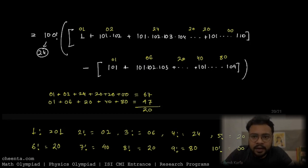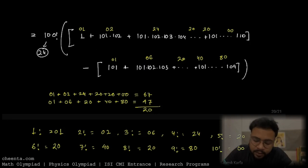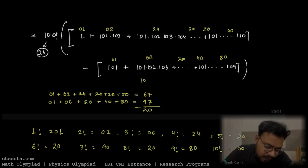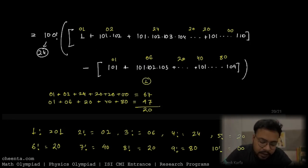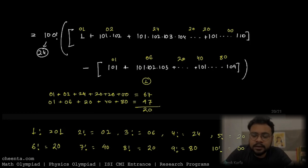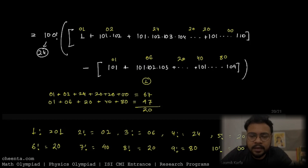Since the big bracket expression ends with exactly one zero, multiplying by 100 factorial (which has 24 zeros) gives a total of 24 + 1 = 25 trailing zeros. That is our answer. I hope you enjoyed this problem. We will meet in the next video. Thank you for watching.